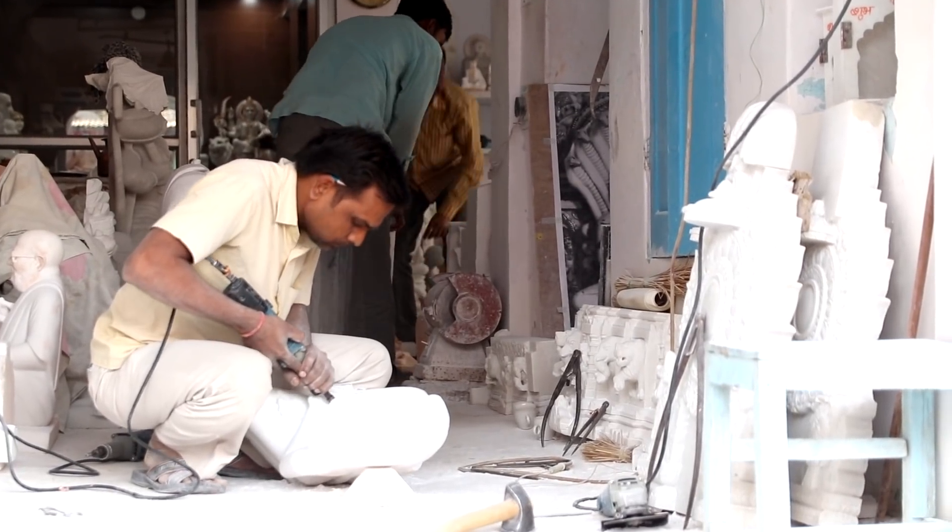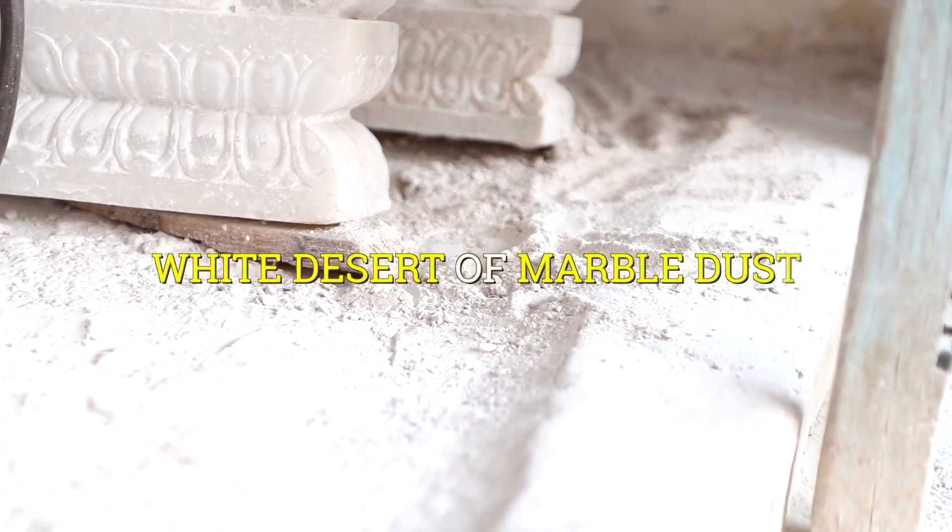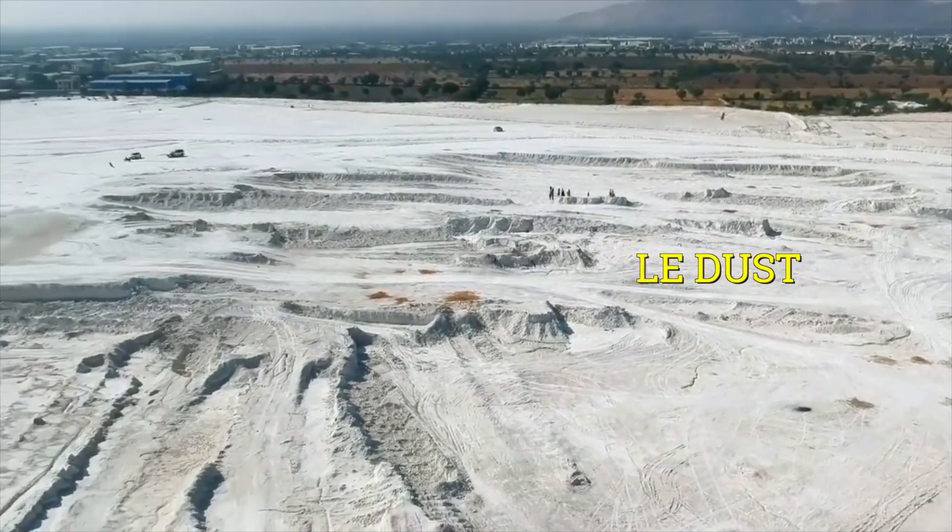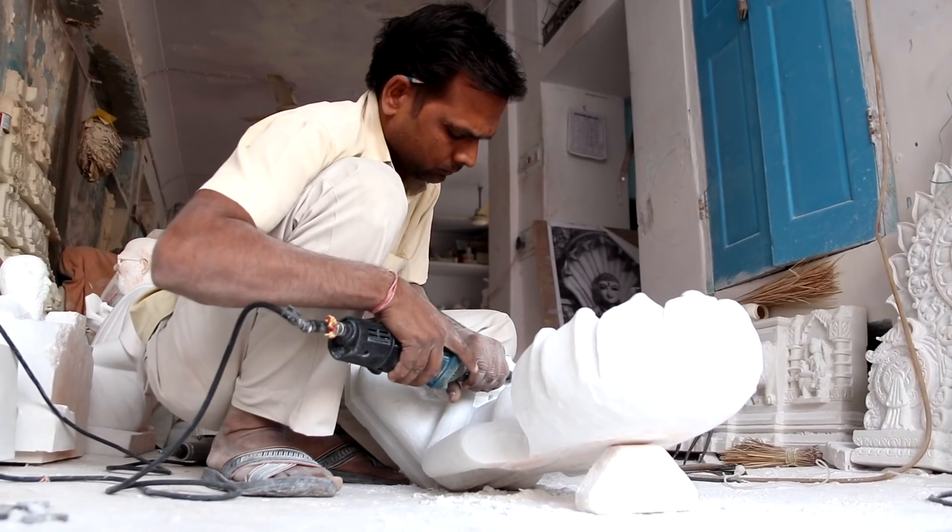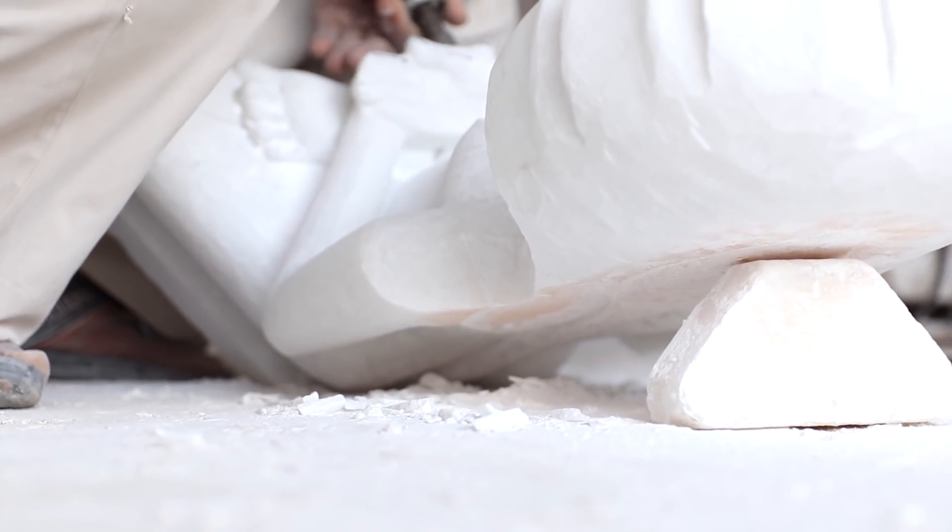In Rajasthan, there are several areas where you will see piles of marble dust and they call it white desert. There is so much marble waste. People are really concerned how to dispose it, what to do with this marble dust.